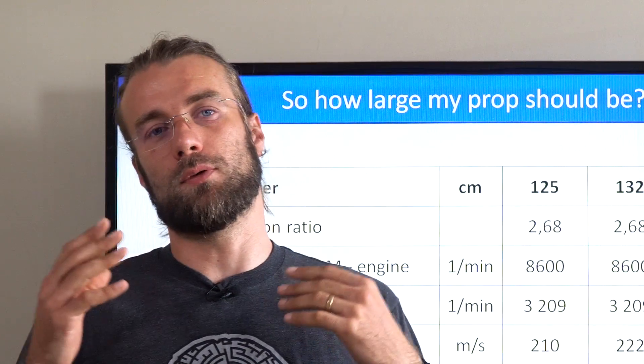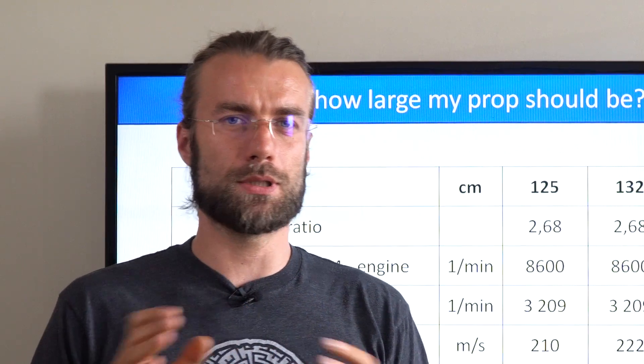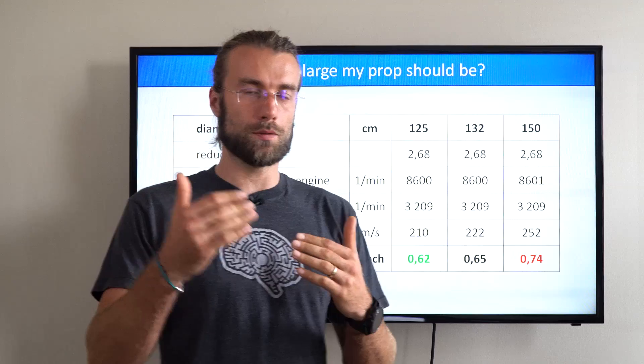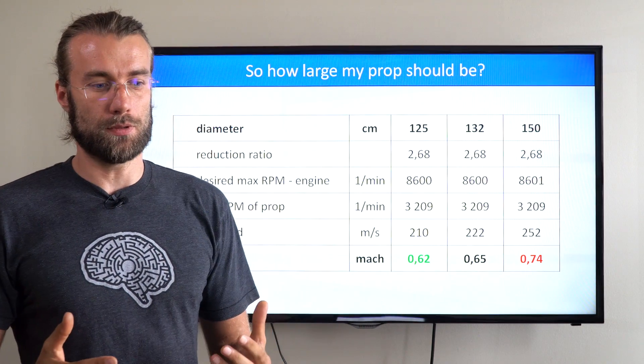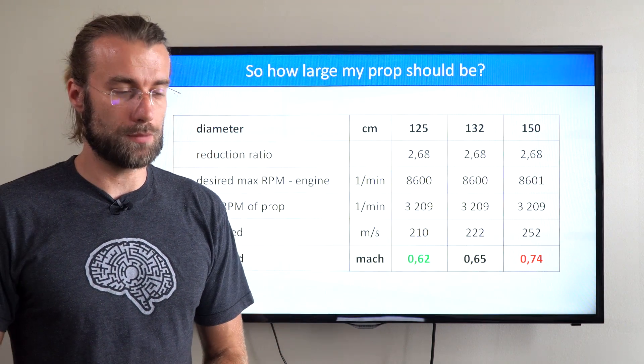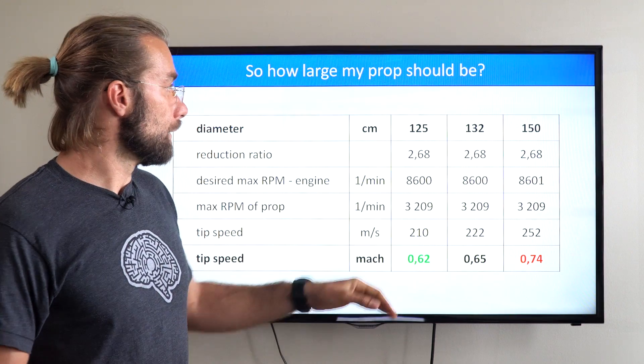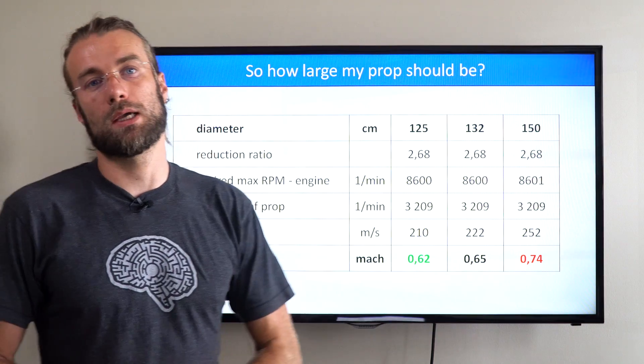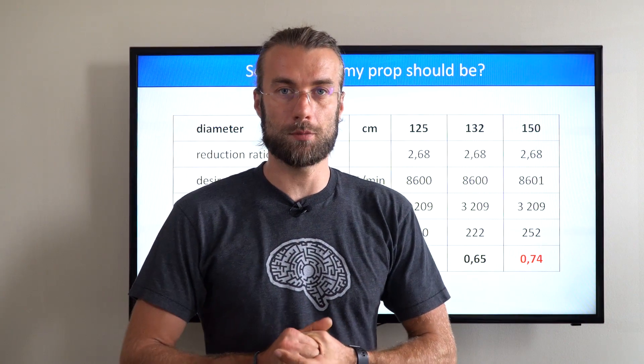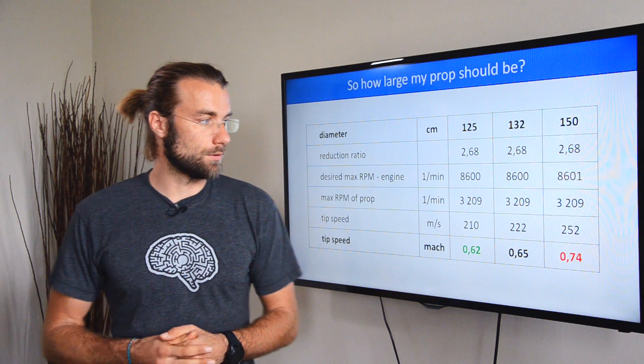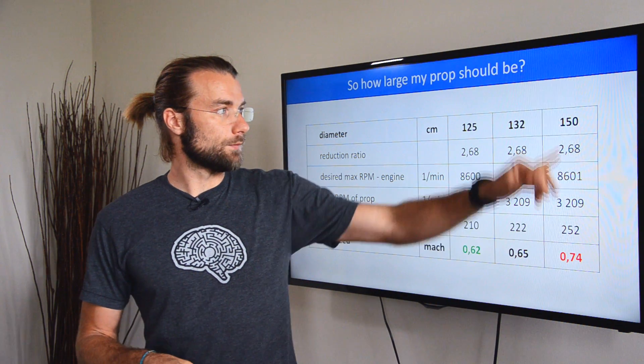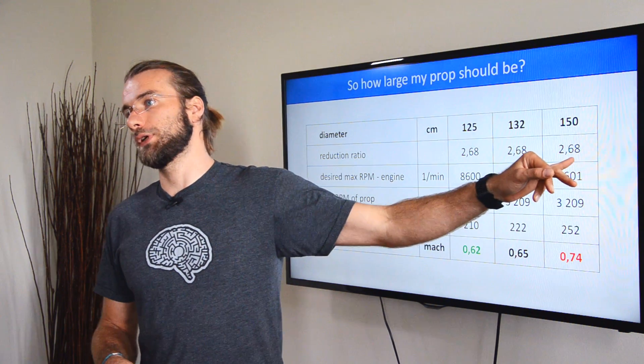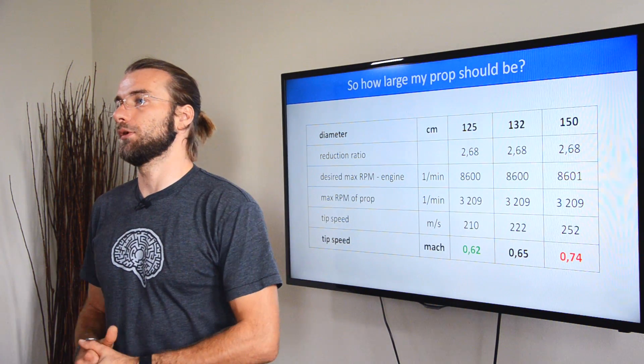A sort of a sweet spot for propellers is the 0.62, because if you increase the tip speed of the propeller beyond this threshold, the sound will be unbearable. It will be just too noisy. This is probably why our 132 cm prop did not pass the sound test in Germany. It was just a little more loud than the limit. And obviously, for a 150 prop, you would definitely have to change the reduction ratio to keep the RPM on the prop low.